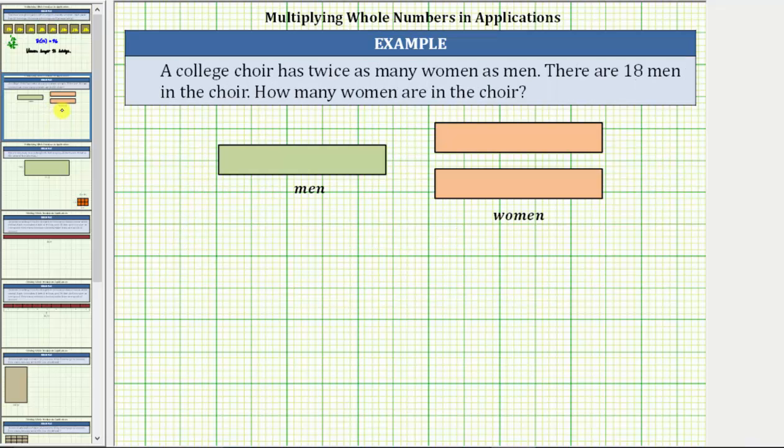For the second example, a college choir has twice as many women as men. There are 18 men in the choir. How many women are in the choir?